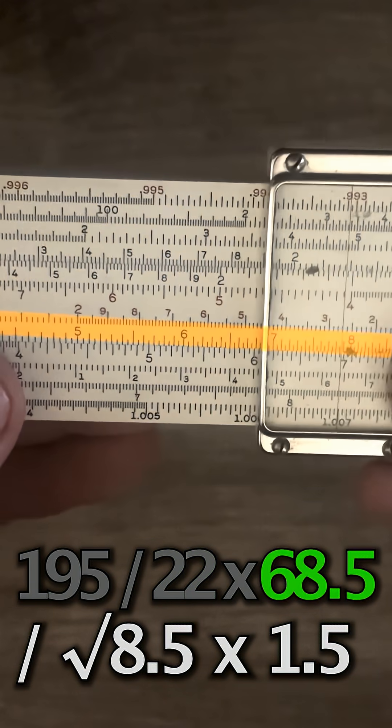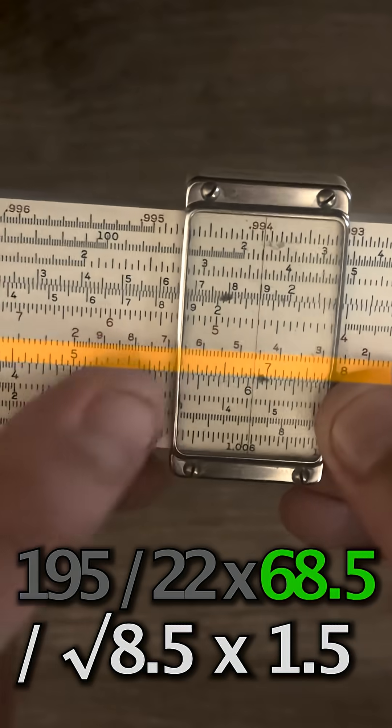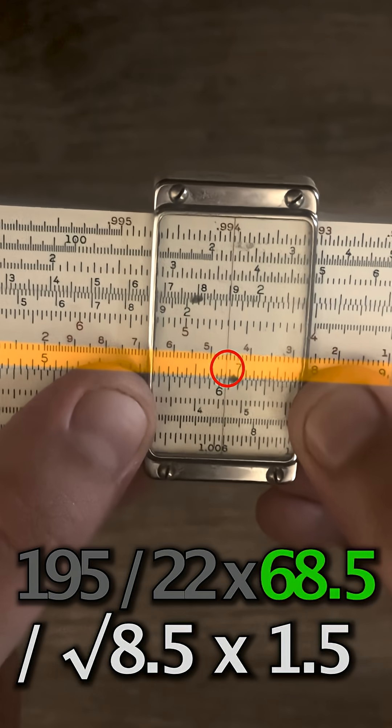And now our next number, we're going to multiply by 68.5. So on the c scale, 68.5 right there.